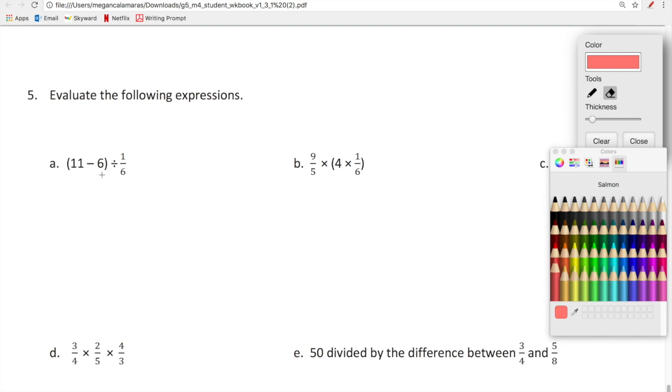So 11 minus six is five. Work pen. Okay, so 11 minus six is five.